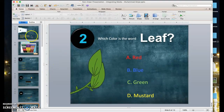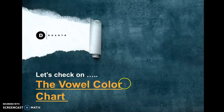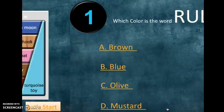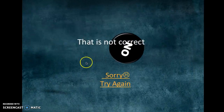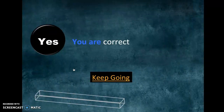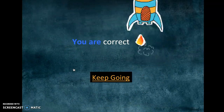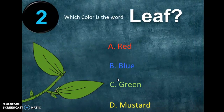Let's check to see if the hyperlinks are working. If I click here — yes, it works. Now the real test: if I click on brown, it takes me to 'sorry, try again.' If I click on blue — correct — and then 'keep going,' it takes me to the next question: 'Which color is the word leaf?' I just want you to have an idea of how to connect slides together with the use of hyperlinks. It's very fun and very engaging.